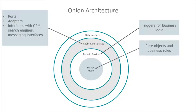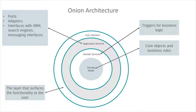We also have search engines and messaging interfaces that take care of translating between components. We also have the user interface — this is the layer that surfaces the functionality to the user. And as we discussed previously, all the infrastructure resides outside of the Onion architecture, including things like databases and servers.